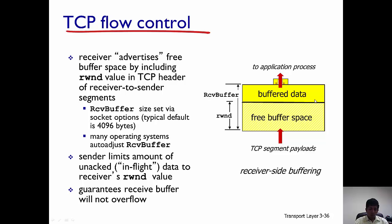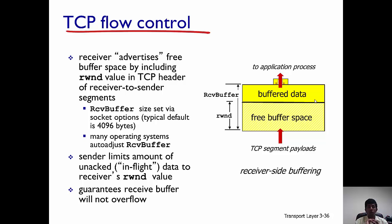The way flow control is implemented is the following. The receiver advertises the free buffer space by including the RWND value in the TCP header sent from the receiver to the sender. The receiver tells the sender the amount of free buffer space it has.